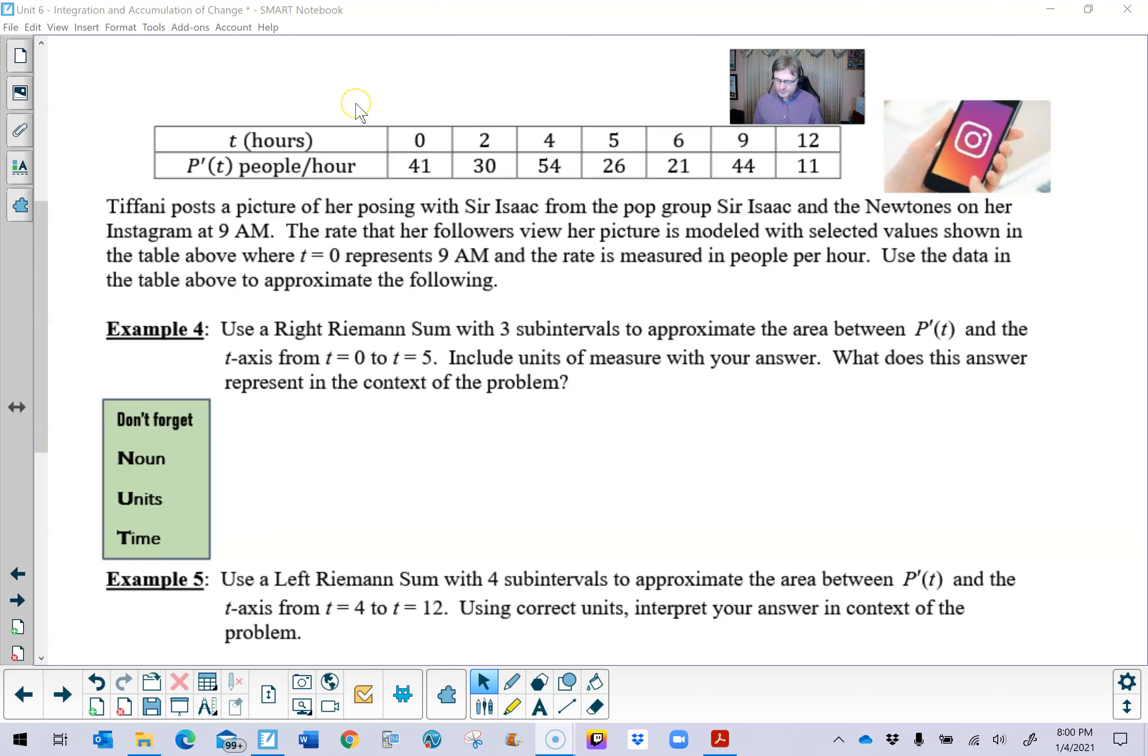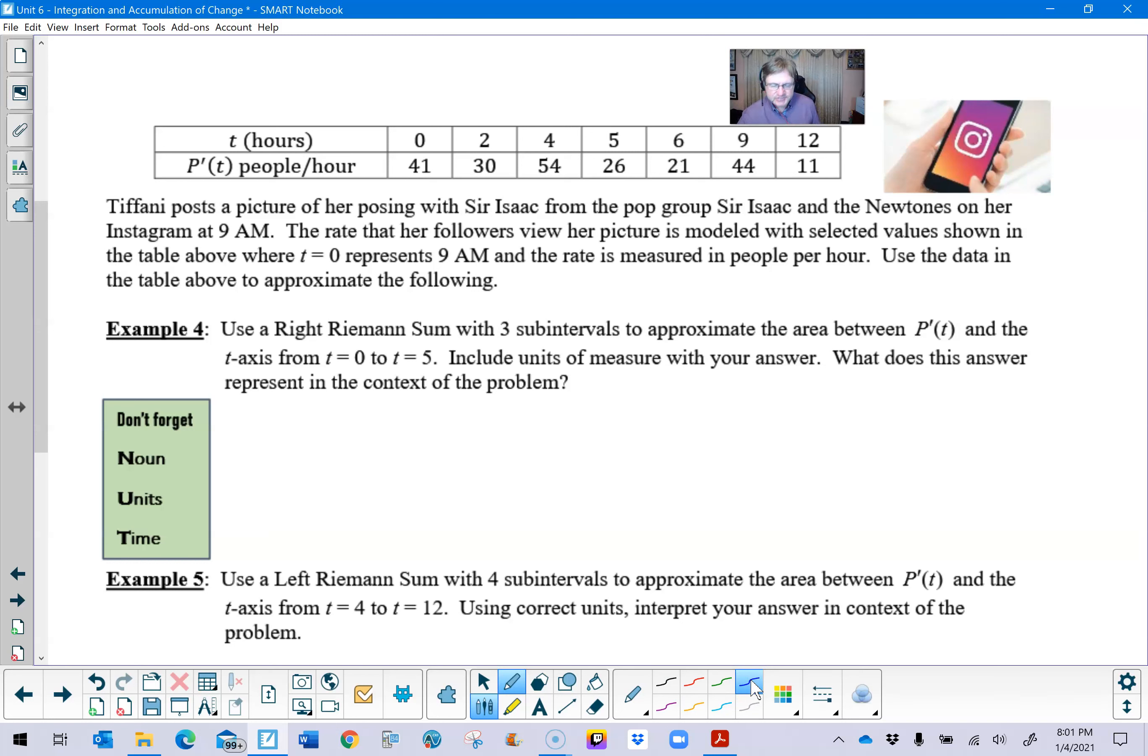Use the data in the table above to approximate the following. In example four says we're going to approximate using a right Riemann sum with three subintervals, the area between p prime of t and the t axis from t equals zero to t equals five. We want to make sure that we include our units of measure, and then we're going to take that answer and we're going to write what it represents within the context of the problem. So a lot of different things that we're going to do here, but the very first thing that we want to get our head wrapped around is this Riemann sum that we're going to take. So if you remember from the last video, I always suggest that you somehow identify two things. You want to identify the type of sum. It's either going to be a right, left, later on we're going to see two more, midpoint and trapezoid. And then you want to identify how many subintervals, in this case three.